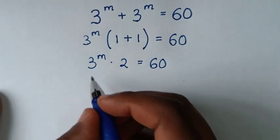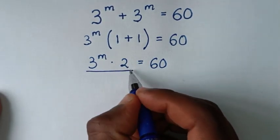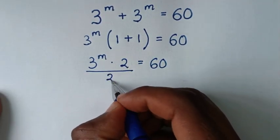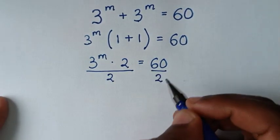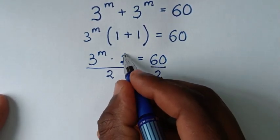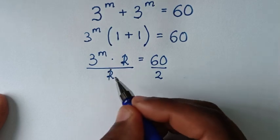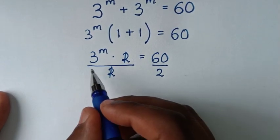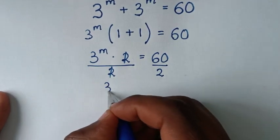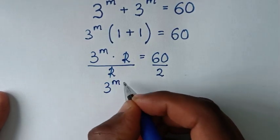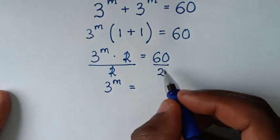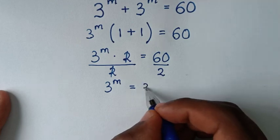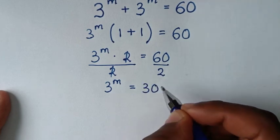From here, we will divide both sides by 2. The 2s will cancel, giving us 3 power m is equal to 60 divided by 2, which is 30.